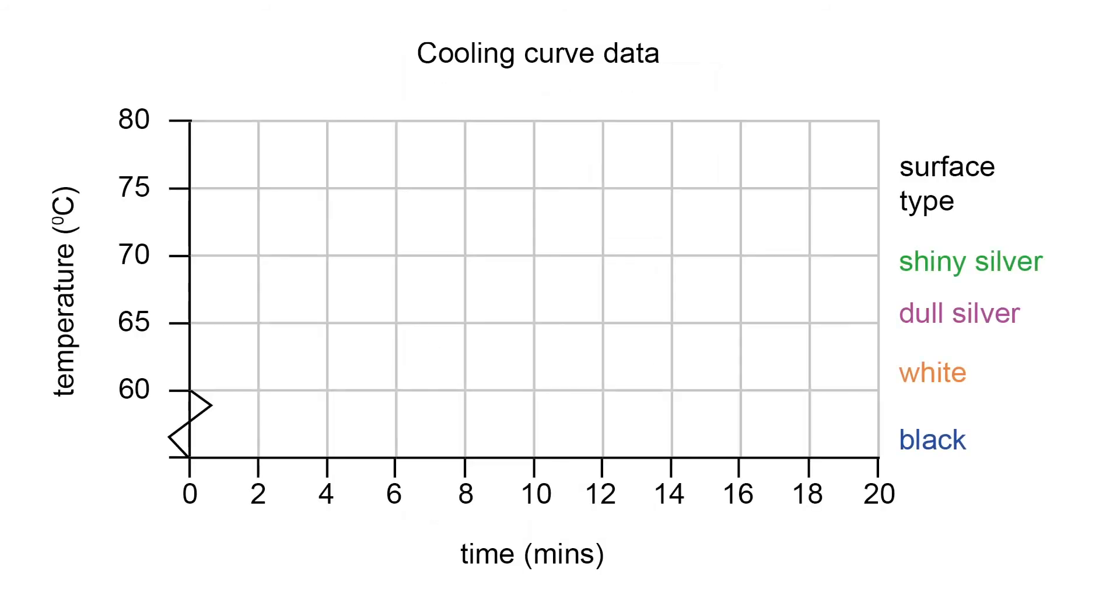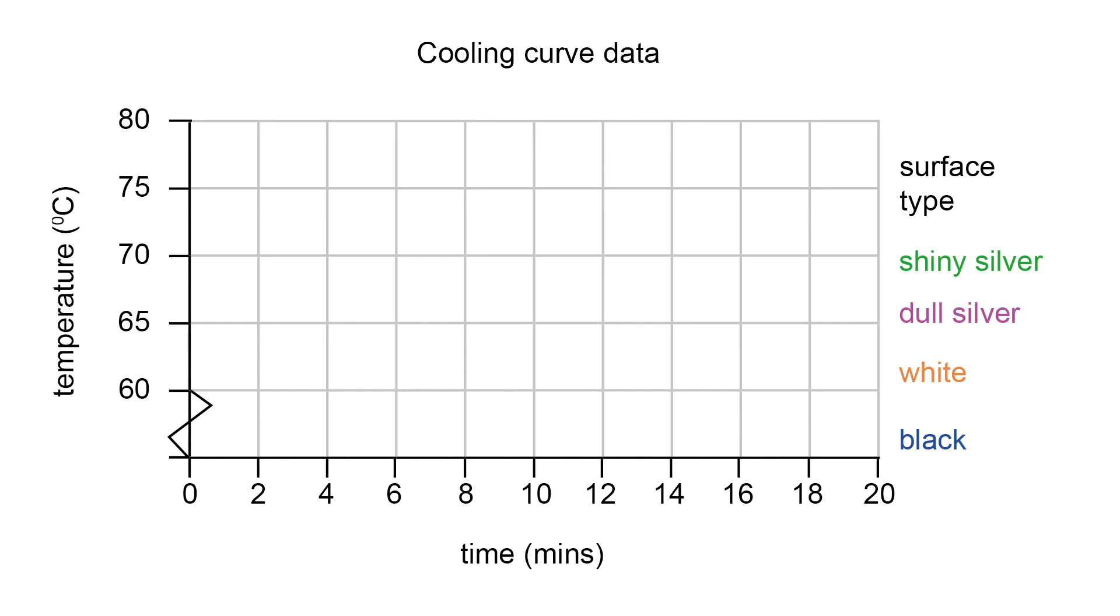You will now need to draw a scatter graph to show temperature against time. When plotting the graph make sure you put the temperature along the y-axis and the time along the x-axis. You should be able to plot all four sets of results on the same graph and join each set of points with a smooth curve.